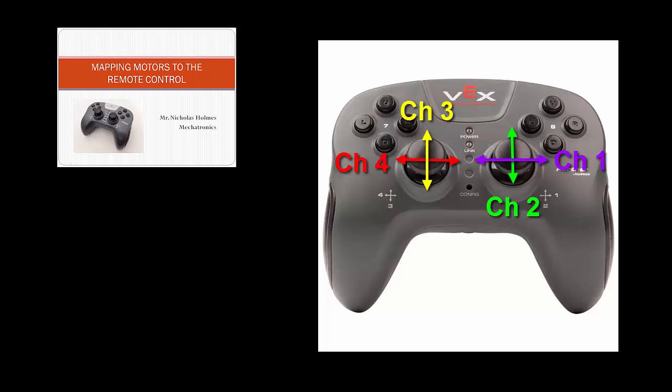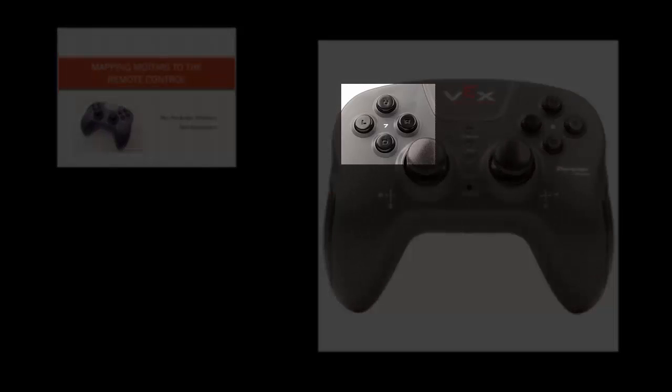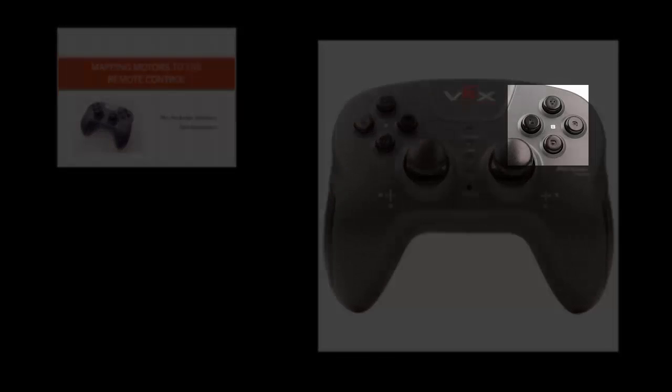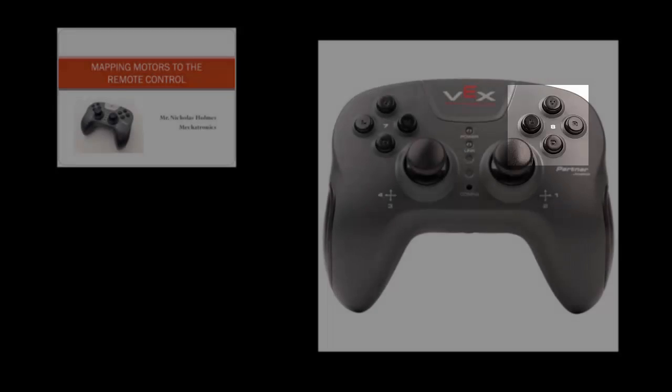There are a total of 12 programmable buttons on the remote control. The eight buttons on the front are broken into two groups of four. The buttons on the left are associated with channel 7. The buttons on the right are associated with channel 8.